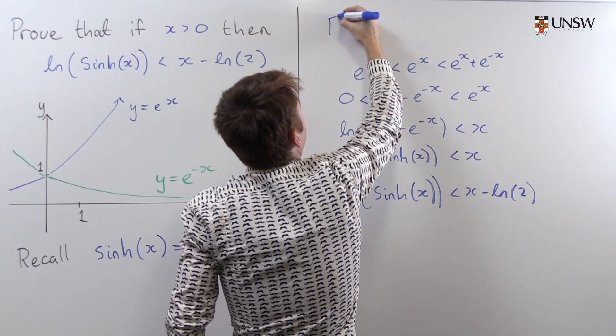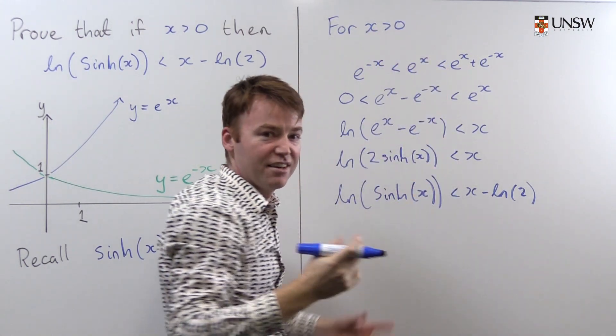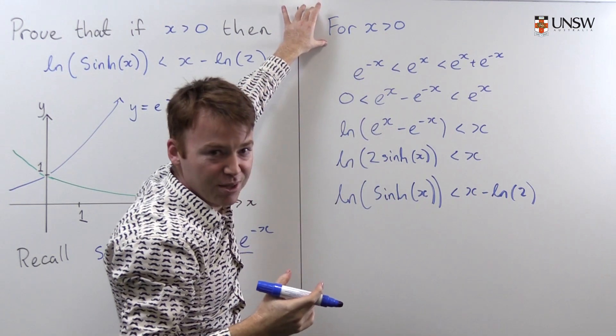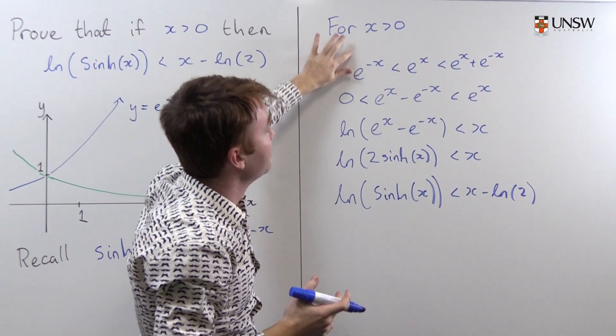So for x greater than 0. Excellent. Now I've got all the structure of my proof. I've got the start and I've got the end. I've only got a little bit left to fill in.